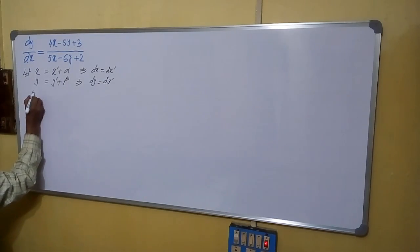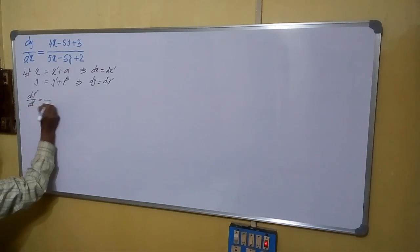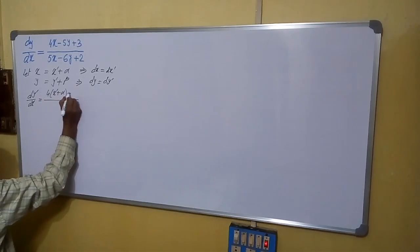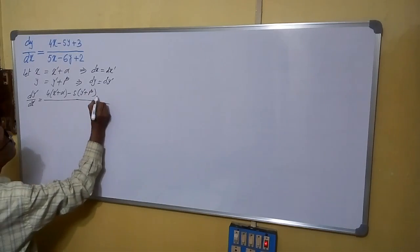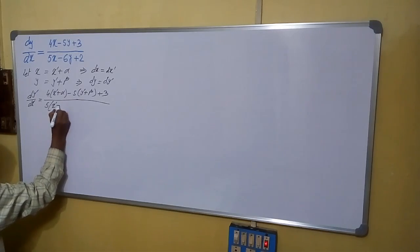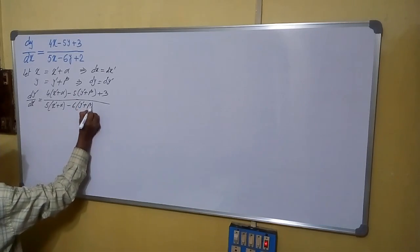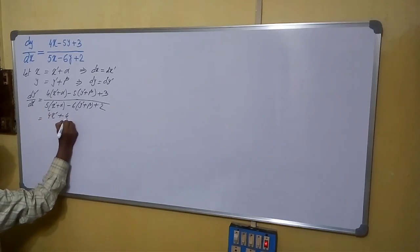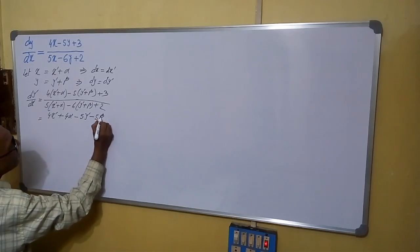So the new equation becomes: dy dash by dx dash equals to 4 into (x dash plus alpha) minus 5 into (y dash plus beta) plus 3, divided by 5 into (x dash plus alpha) minus 6 into (y dash plus beta) plus 2. This expands to 4x dash plus 4 alpha minus 5y dash minus 5 beta plus 3.